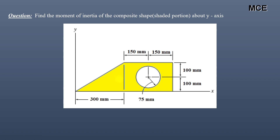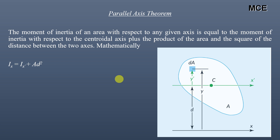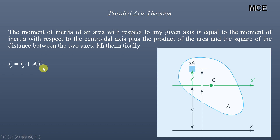Before finding the moment of inertia of this composite shape, let us recap the parallel axis theorem, which states that the moment of inertia of an area with respect to any given axis is equal to the moment of inertia with respect to the centroidal axis plus the product of the area and the square of the distance between the two axes. These two axes should be parallel. So the moment of inertia about the x-axis equals Ix-dash plus area multiplied by d-squared.